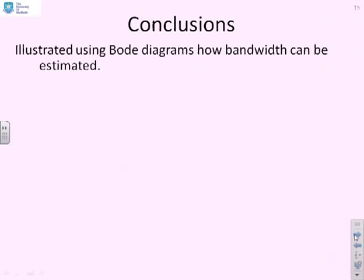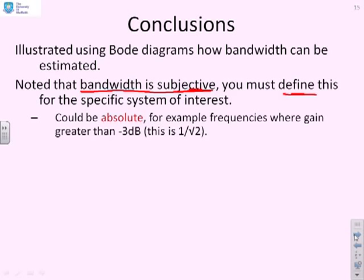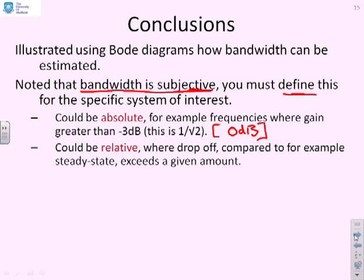Conclusions. We've illustrated that using Bode diagrams, you can estimate bandwidth very easily. We've noted that the definition of bandwidth is to some extent subjective. So you've got to be careful about your definition before you start. It could be absolute. For example, frequencies where gain is greater than minus 3dB or 1 over root 2, or even in some cases for convenience, you find using 0dB gives pretty close to the same answer. It could also be relative. So you might be looking at the drop-off compared to, for example, the steady state.